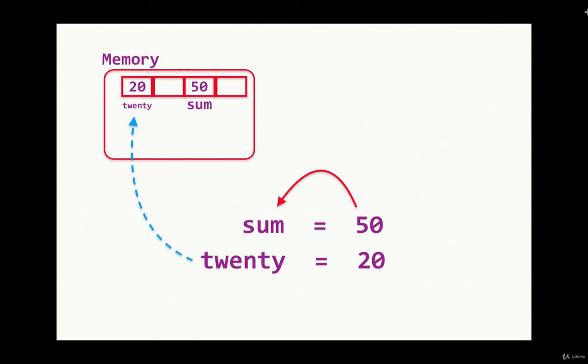Similarly, in this example where I have assigned the number 20 to variable name twenty, it will store 20 in some other random block of memory and name it twenty, as you can see in the memory block.